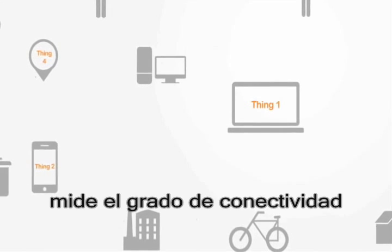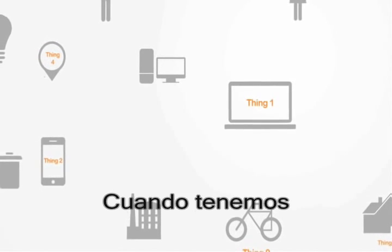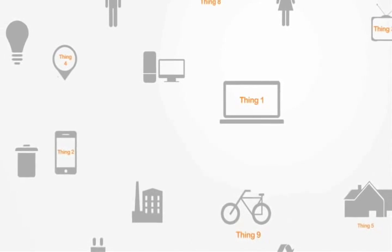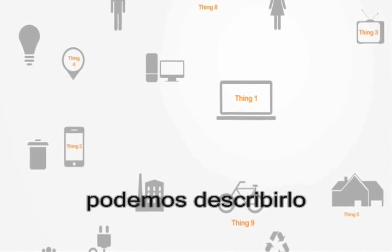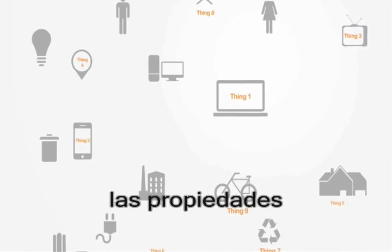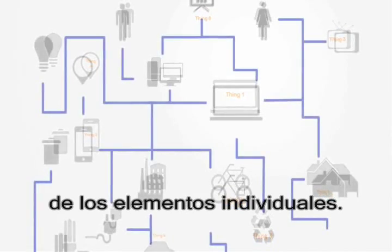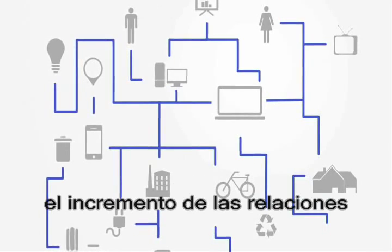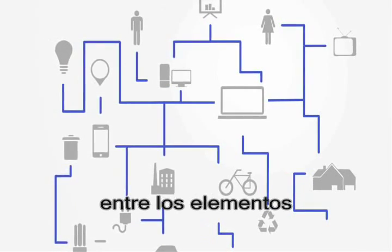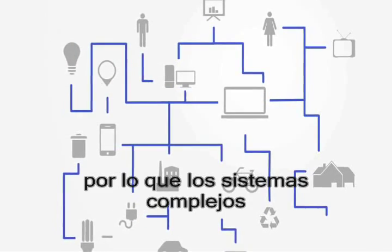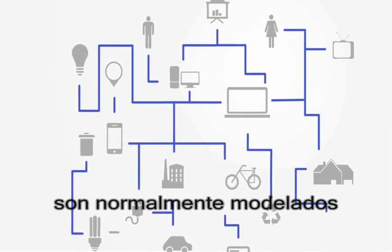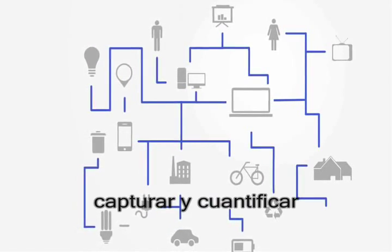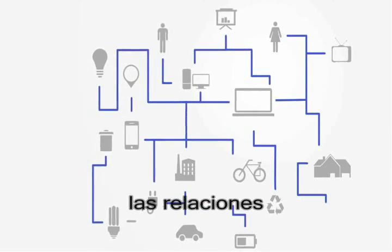Secondly, it is a measurement of the degree of connectivity within a system. When we have a low level of connections between elements, we can describe the system by simply describing the properties of the individual elements. But as we increase the connectivity, it is increasingly the relations between the elements that come to define the system. Thus, complex systems are typically modeled as networks that can capture and quantify this information about the relationships between the elements.